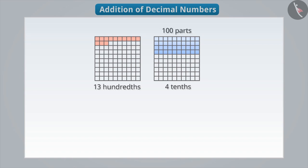By doing so, we will get a total of 100 parts. Now you can see that there are 40 shaded parts here. So, we can say that 4 tenths is equal to 40 hundredths.